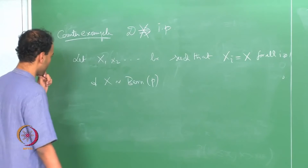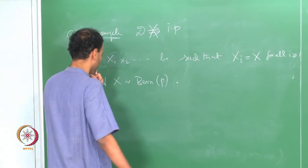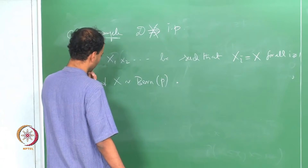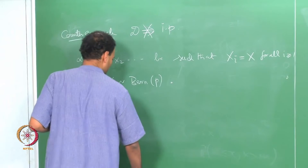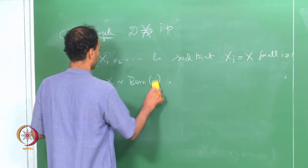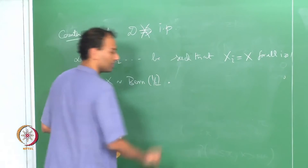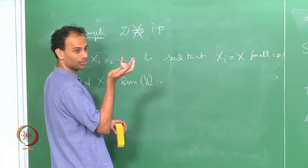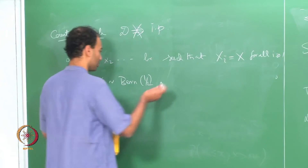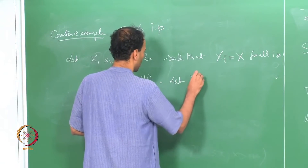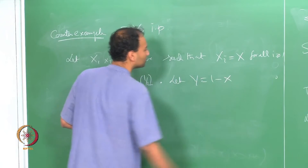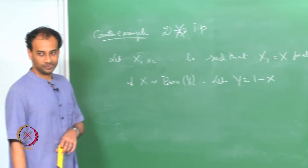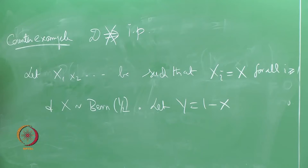Then define Y = 1 − X. So whenever X takes value 1, Y takes value 0 and vice versa.